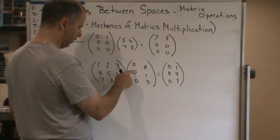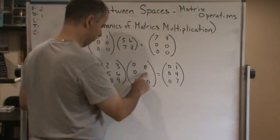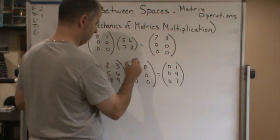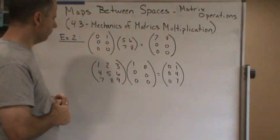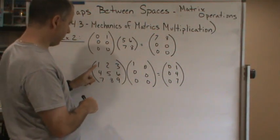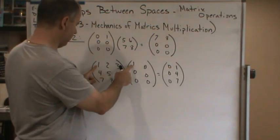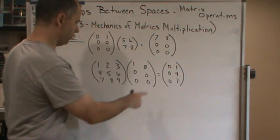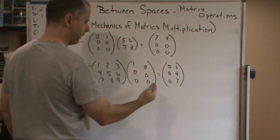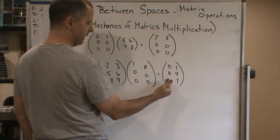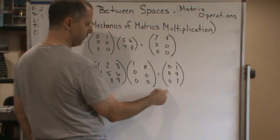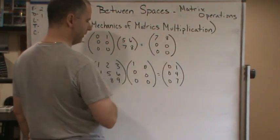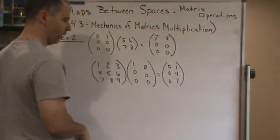Going over to the other side, I get one and then the rest are zeros, so I get a one here. In other words, it moves one, four, seven over to the left side. And if I move it to here, it'll be two, five, eight on the left side and so on.